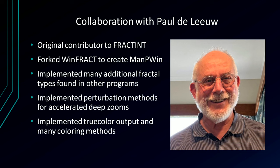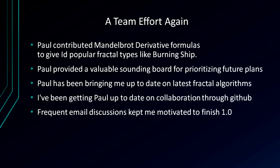One of the original FractInt contributors joined me toward the end as I was finishing the 1.0 release. It turns out he had forked WinFract to create a program called ManPWin, implementing many additional fractal types, a perturbation methods algorithm for accelerating very deep zooms, and true color output. He and I have been collaborating — it's a team effort again. He created a formula file to implement the burning ship fractal type, which is very popular today, and has served as a valuable sounding board for prioritizing what goes into 1.0 versus 1.1.